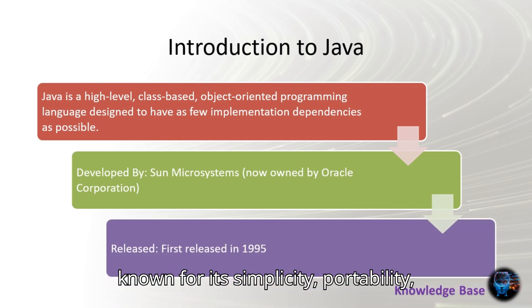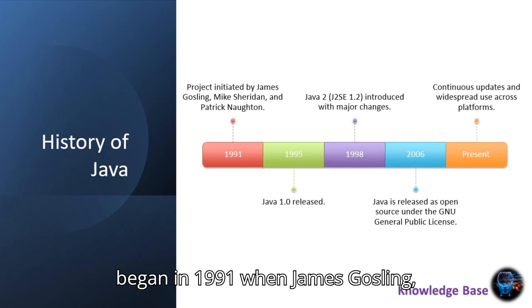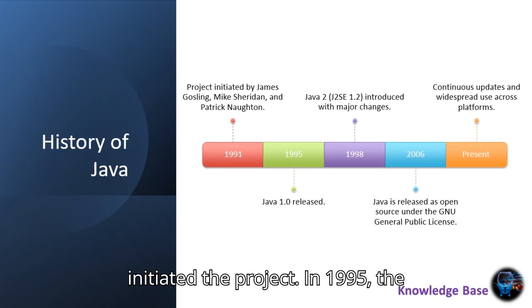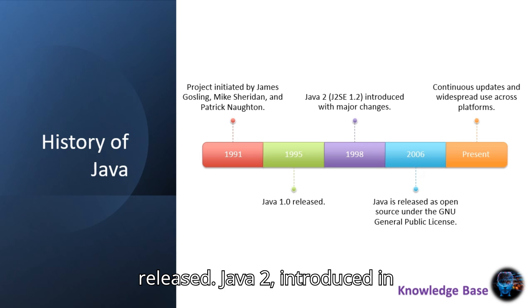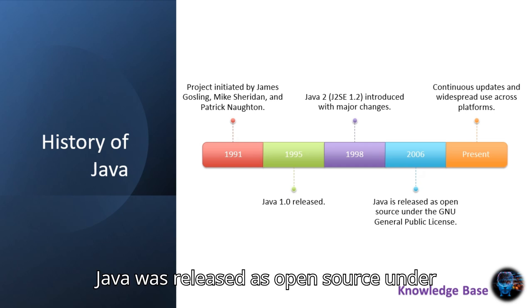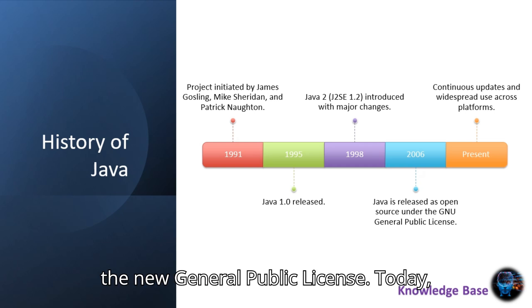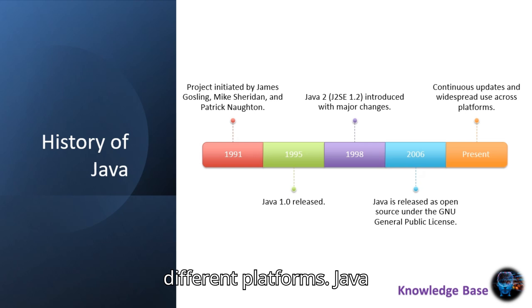Java is known for its simplicity, portability, and performance. The history of Java began in 1991 when James Gosling, Mike Sheridan, and Patrick Naughton initiated the project. In 1995, the first version, Java 1.0, was released. Java 2, introduced in 1998, brought significant changes. In 2006, Java was released as open source under the GNU General Public License. Today, Java continues to evolve with regular updates and is widely used across different platforms.